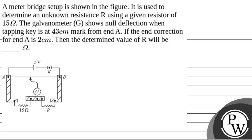Let's read the question. The question says that a meter bridge setup is shown in the figure. It is used to determine an unknown resistance R using a given resistor of 15 ohm.